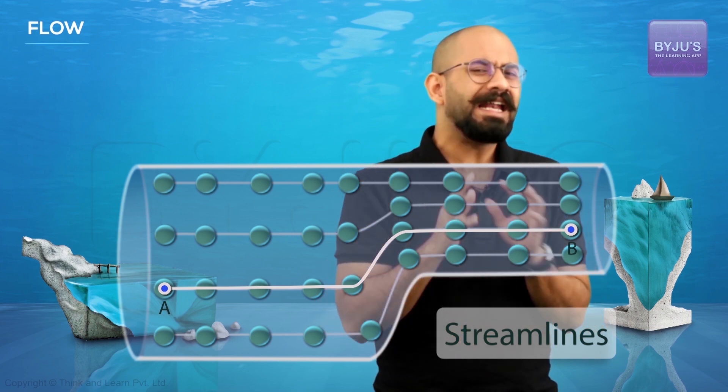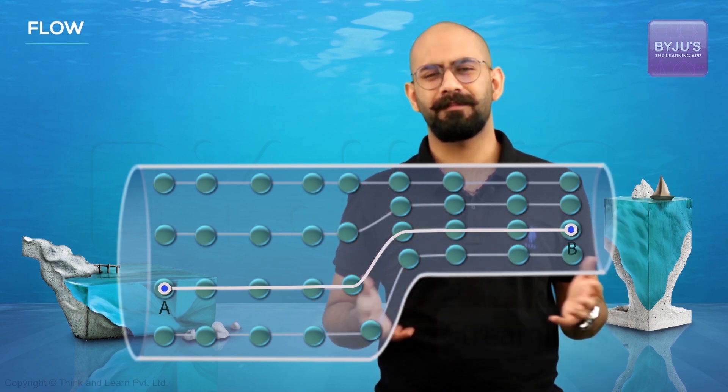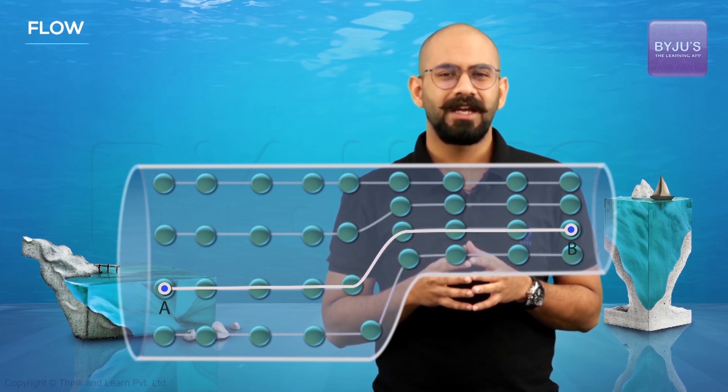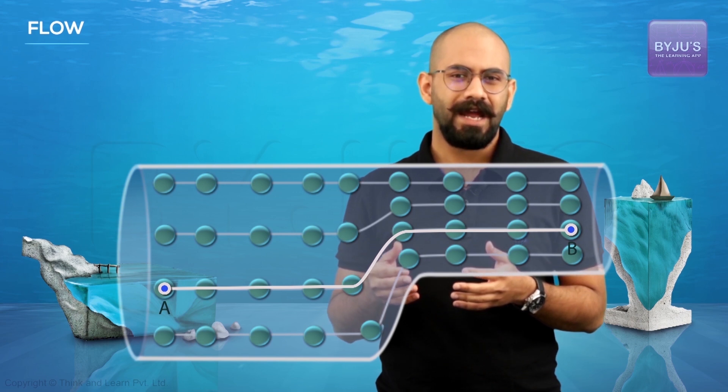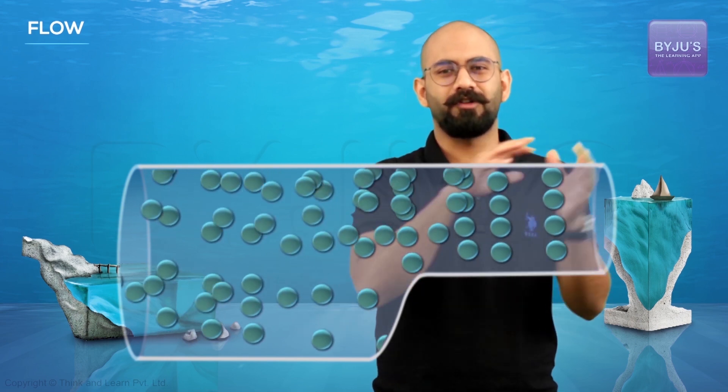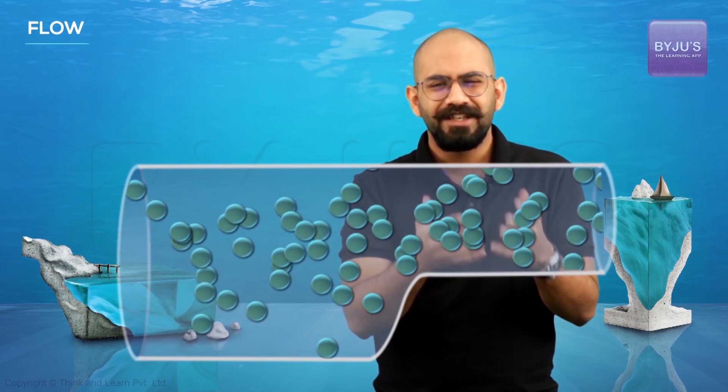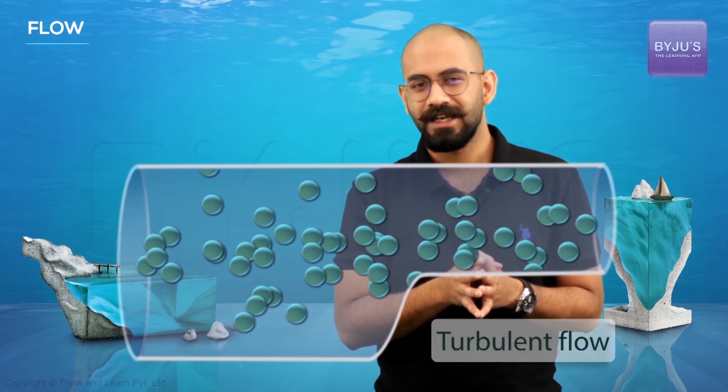Now this is a very ideal type of flow and does not happen very often in daily life, but it's just easy for us to analyze. And this type of flow where all the balls go crazy and start crossing each other's paths is called turbulent flow. But in our study, we will be dealing only with incompressible fluids that are undergoing steady flow.